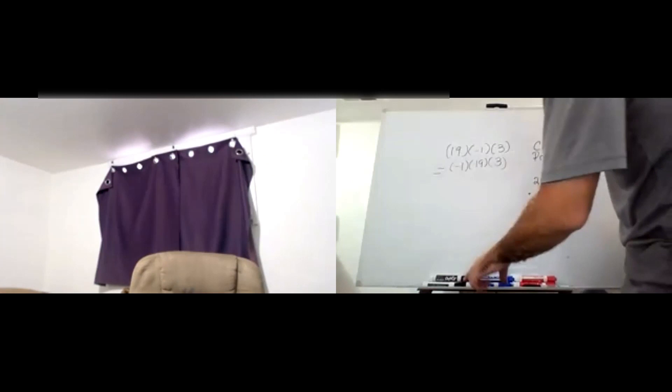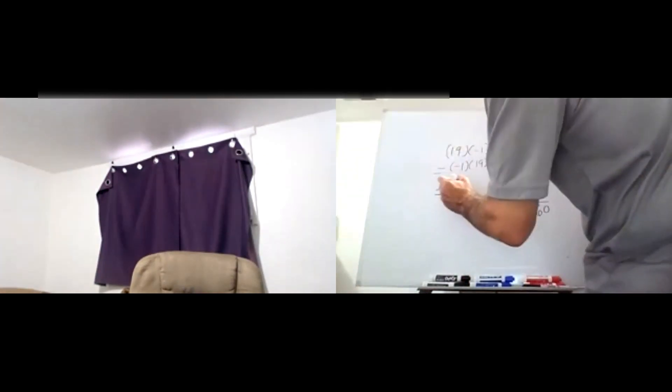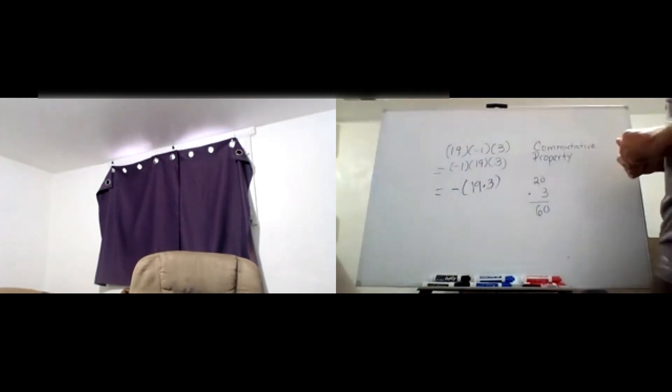Now that we know it's negative, multiplying by 1 is not going to change anything, so we're really concerned with figuring out what 19 times 3 is.